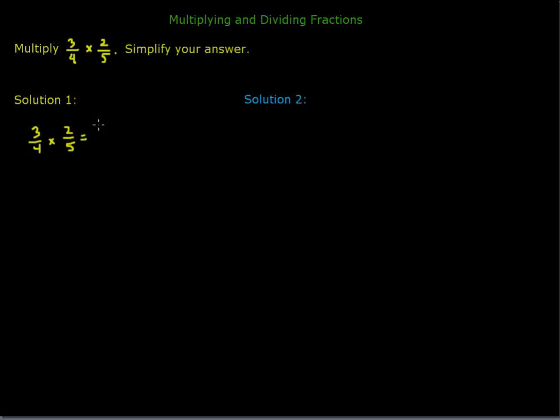Multiplying the numerators, 3 times 2, over, and then we just multiply the denominators, 4 times 5. So when multiplying fractions, all we do is multiply the numerators and multiply the denominators, and that becomes our new fraction. So 3 times 2 is 6 over 4 times 5 is 20. And then we can simplify.